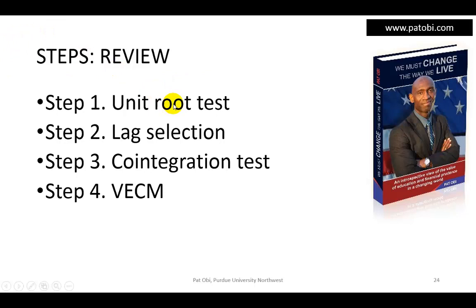As a reminder, in step one I showed how we begin with a unit root test to ascertain if the variables are I(1). In step two, I showed the process for determining the optimal number of lags to use in the co-integration test and subsequent error correction model. In step three, I demonstrated how to carry out the Johansen test of co-integration. Having found the variables to be co-integrated, we now proceed with the vector error correction model in step four.